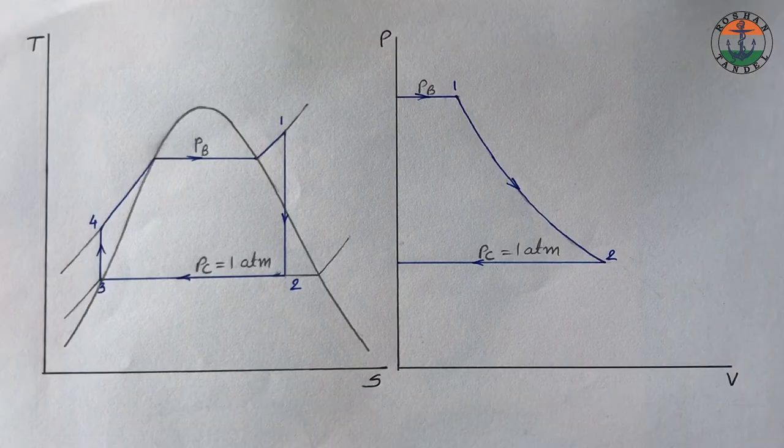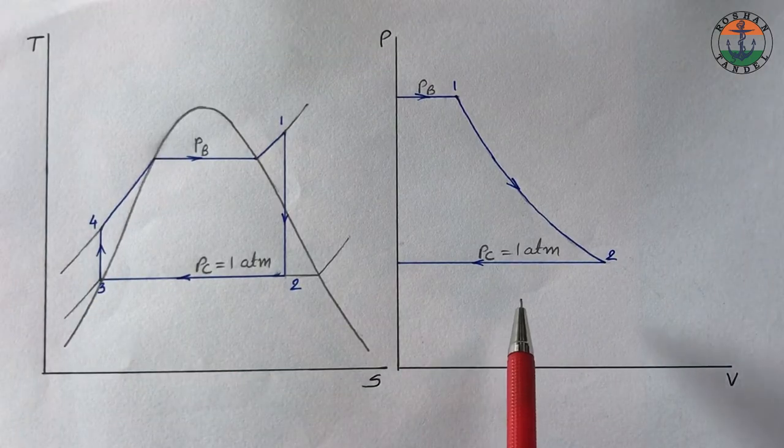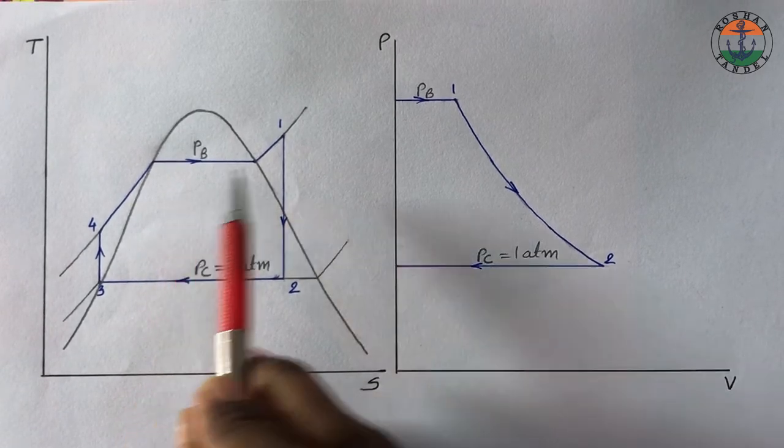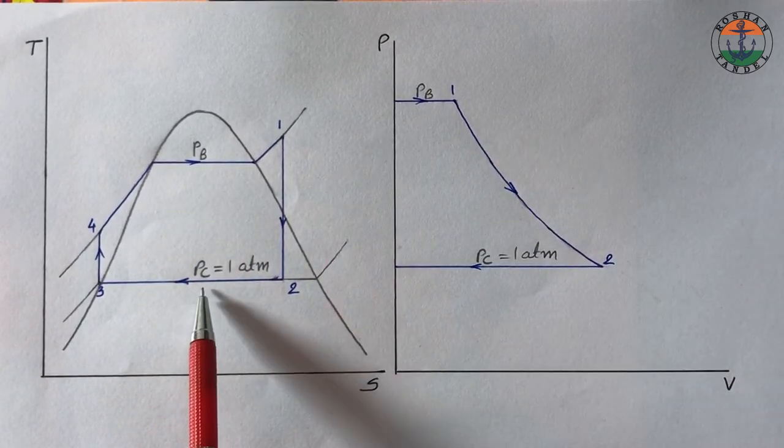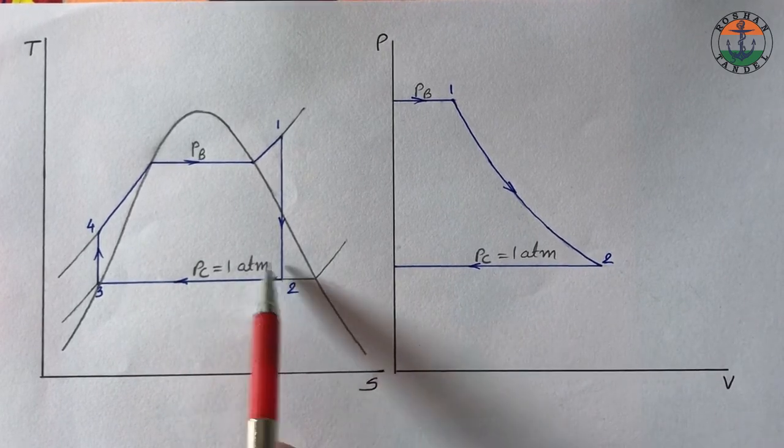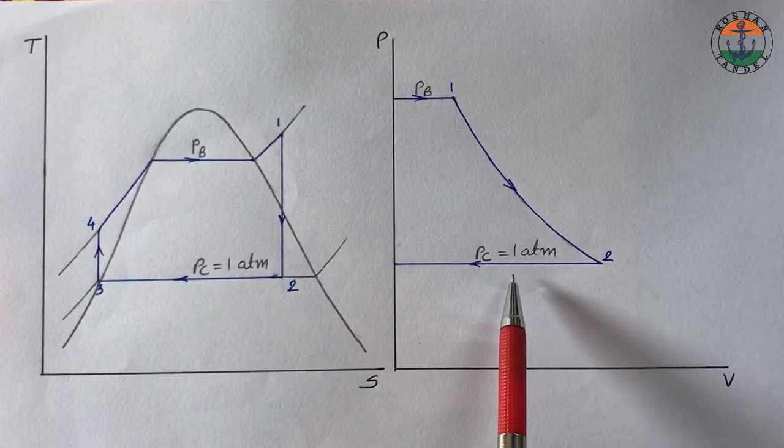Ideal Rankine cycle on TS and PV diagram is shown over here. PB is the boiler pressure and PC is the condenser pressure. Right now condenser pressure is assumed to be 1 atmospheric.